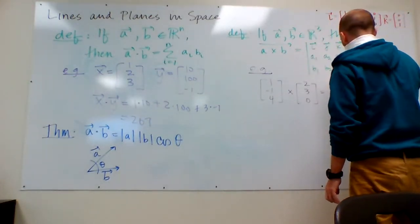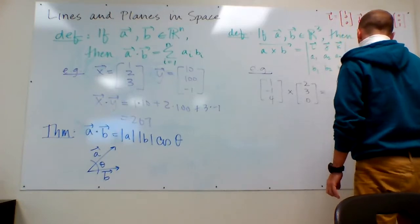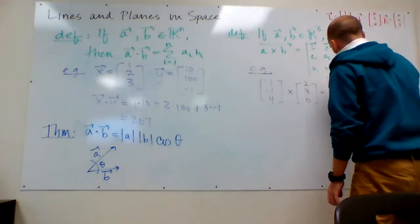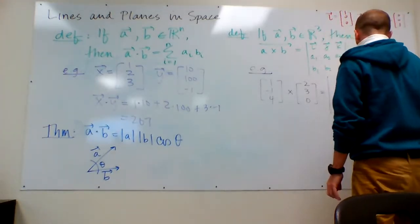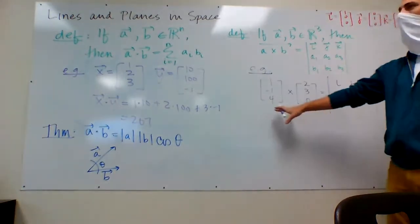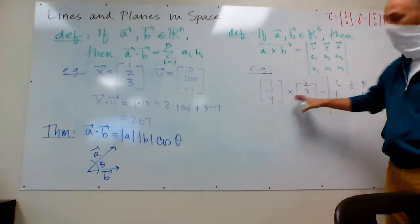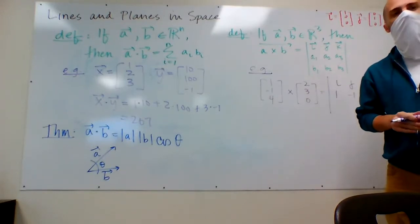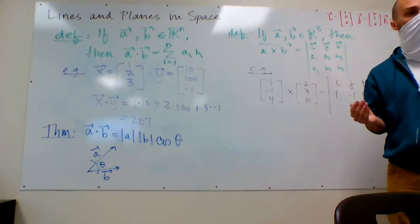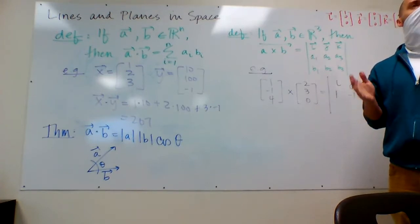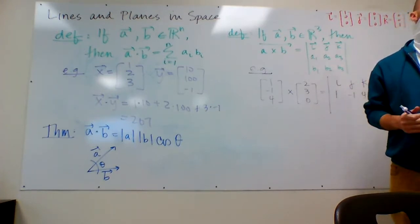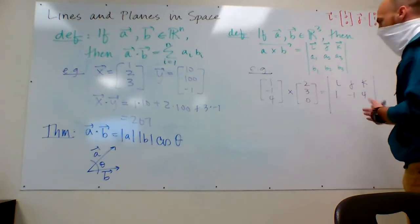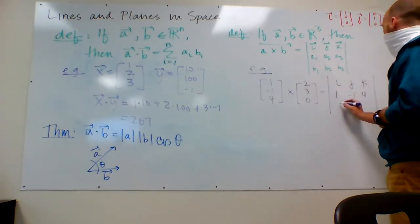We're going to set up the little matrix, I, J, K, 1, negative 1, 4. And it is important that you put the one that you're crossing on the left first, because that was what I was going to say, the cross product is anti-commutative. You could even see that from my right hand rule with the markers that the A crossed with B is going to be the negative of B crossed with A, because of the way the right hand rule works. So 2, 3, 0.